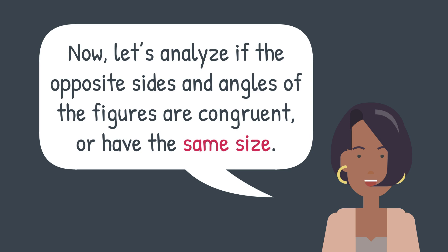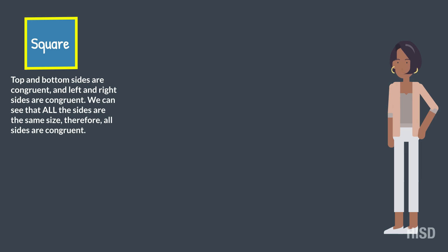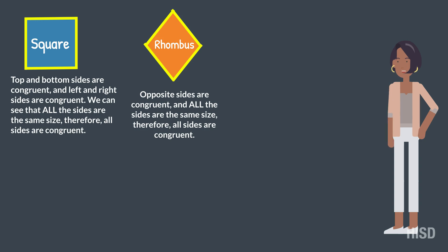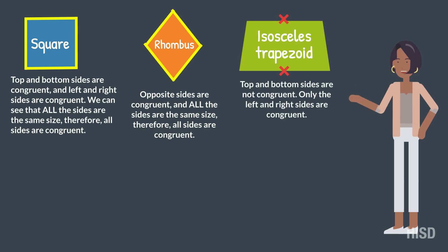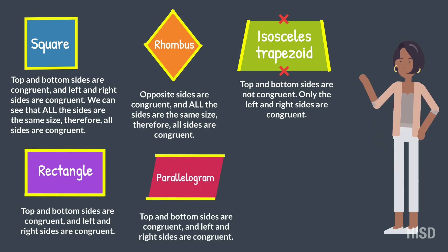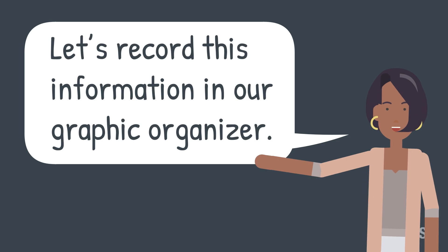Now let's analyze if the opposite sides and angles of the figures are congruent or have the same size. Square: top and bottom sides are congruent, and left and right sides are congruent — all sides are the same size, therefore all sides are congruent. Rhombus: opposite sides are congruent and all sides are the same size, therefore all sides are congruent. Isosceles trapezoid: top and bottom sides are not congruent; only the left and right sides are congruent. Rectangle: top and bottom sides are congruent, and left and right sides are congruent. Parallelogram: top and bottom sides are congruent, and left and right sides are congruent. Right trapezoid: none of the sides are congruent. Let's record this information in our graphic organizer.